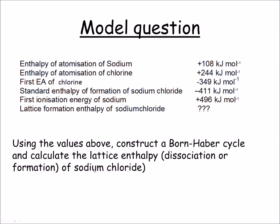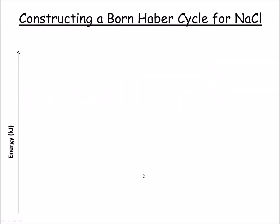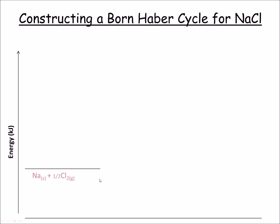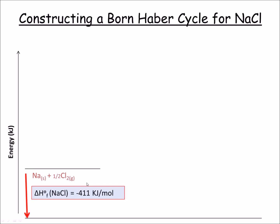This question wants us to construct a full Born-Haber cycle for sodium chloride. It also wants us to calculate the lattice enthalpy, which can either be the dissociation or the formation of sodium chloride. I'm going to start by writing down the elements in their standard states. If these elements combine in their standard states, that gives us sodium chloride, governed by the standard enthalpy of formation — in this case minus 411 kJ/mol. We then atomize the sodium, which requires 108 kJ/mol, giving us sodium in the gaseous state.